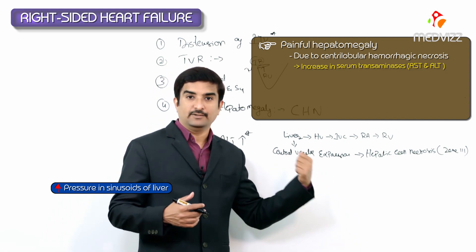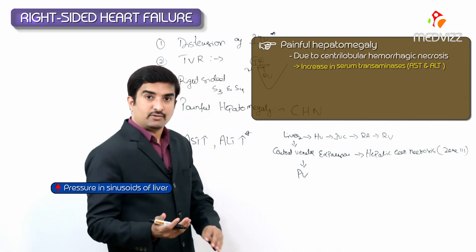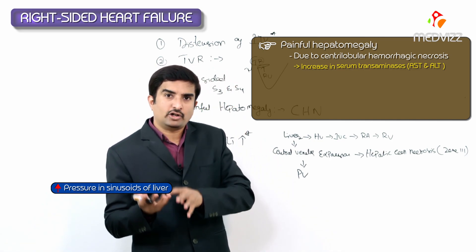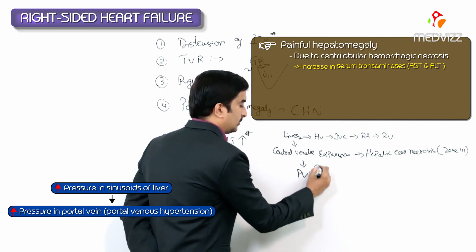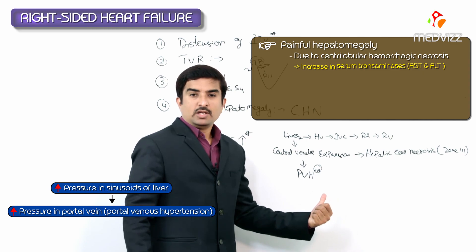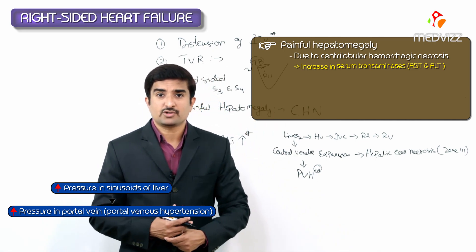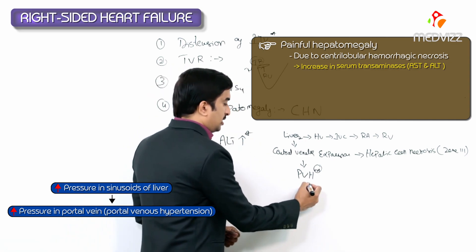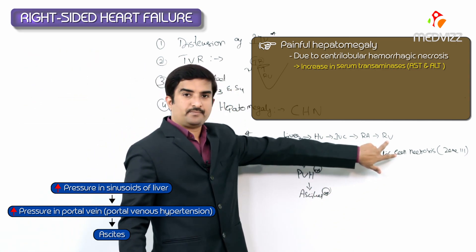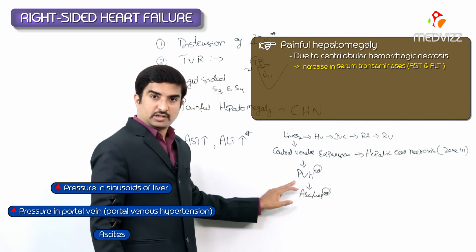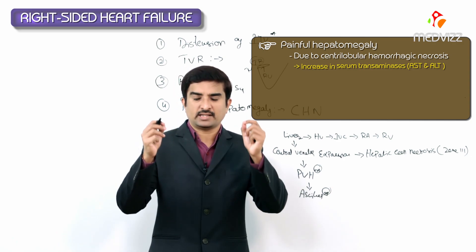Increased pressure is transmitted to the sinusoids of the liver. Since the portal vein drains into the sinusoids, when sinusoids are blocked, the portal vein cannot drain into the liver, causing portal venous hypertension. Long-standing cases of right ventricular failure can cause portal vein hypertension, which leads to the development of ascites.